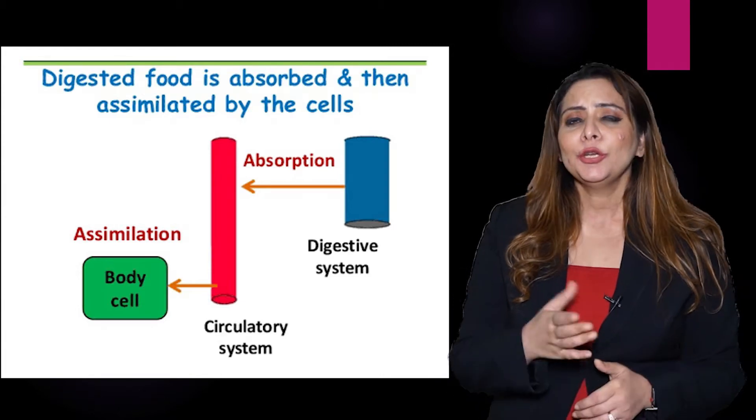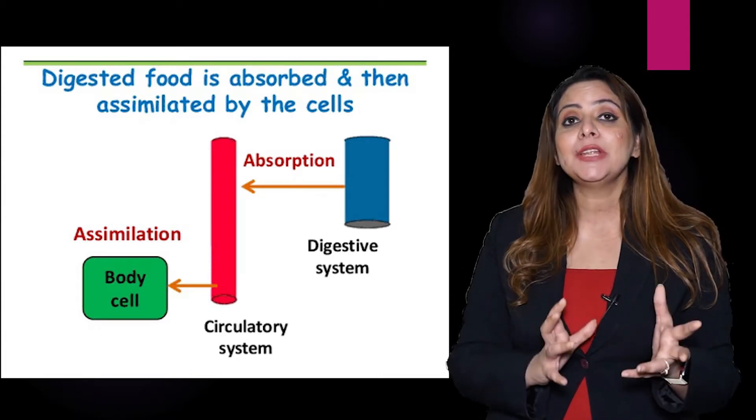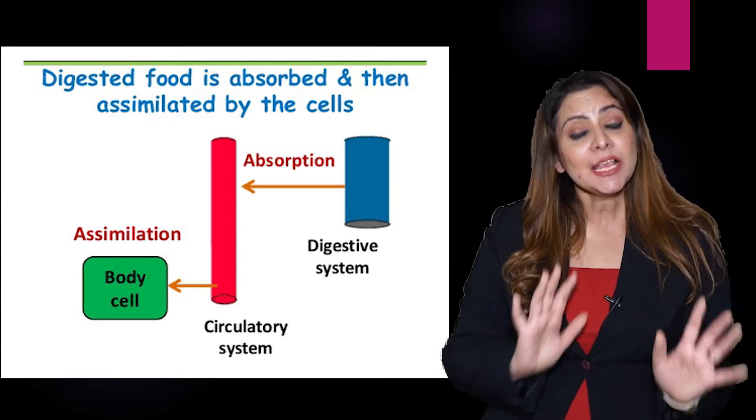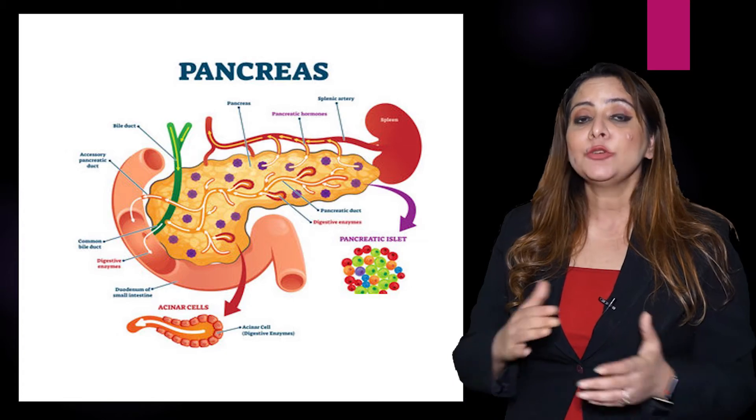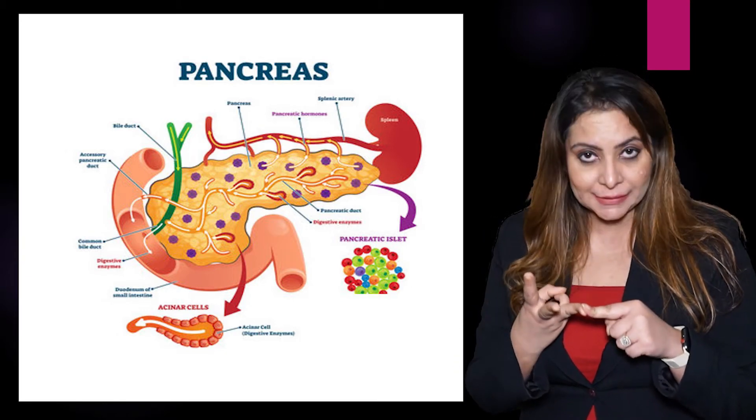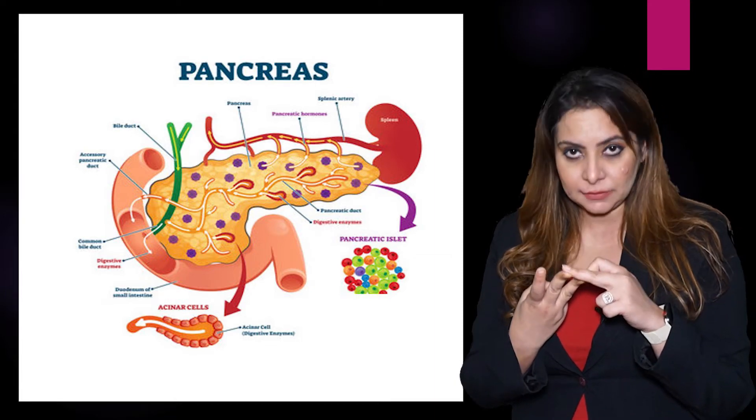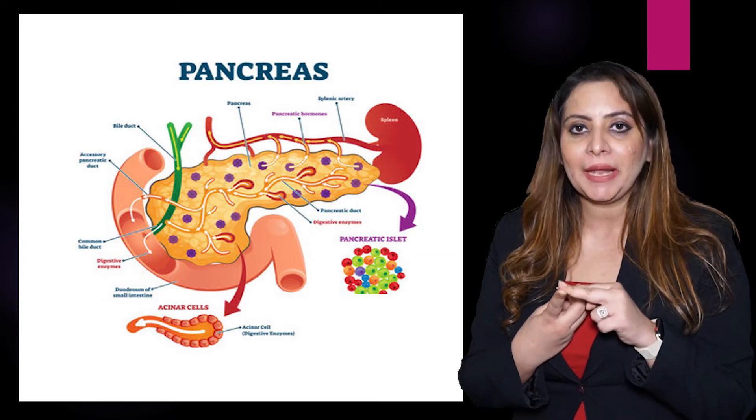The next gland is the pancreas. The pancreatic gland has a special feature - it is both exocrine and endocrine in function, meaning it can secrete enzymes as well as hormones. For the digestive system, we consider its exocrine function. The pancreas secretes pancreatic juices, which is a mixture of three enzymes: pancreatic amylase, pancreatic lipase, and pancreatic trypsin.